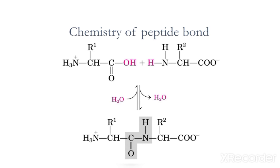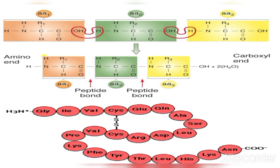This is the chemistry of the peptide bond. One molecule of amino acid and another — when they join, the carboxyl group of one amino acid and the amine group of the other form a peptide bond. The bond visible in the center, highlighted, is the peptide bond, and here a water molecule is released. The amine end is called the N-terminus and the carboxyl end is called the C-terminus. In peptide bond formation, OH is removed from the carboxyl group and H is removed from the amine group.